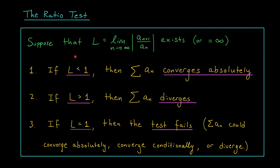First, if L is less than 1, then in the long run our terms are behaving comparably to a convergent geometric series, and the series is absolutely convergent. If instead L is bigger than 1, then in the long run our terms are behaving comparably to a divergent geometric series, so our series diverges. Finally, if L is equal to 1, the test is inconclusive — the series could converge absolutely, converge conditionally, or diverge. We can't make any conclusions using the ratio test alone.